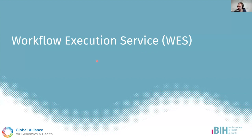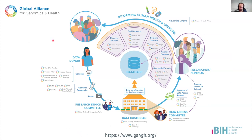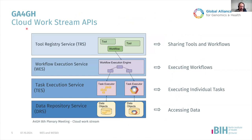WES stands for Workflow Execution Service, which is an API developed by the Global Alliance for Genomics and Health — the GA4GH. GA4GH develops standards that aim to cover the whole process for genomic sequencing in clinics and research, starting with standardized consenting, genome sequencing, definition of file formats, standardized ways to provide access to data, and up to a defined standardized way for researchers to actually work with the data.